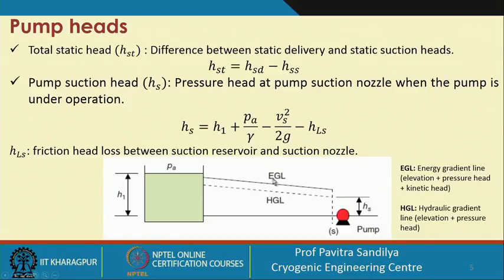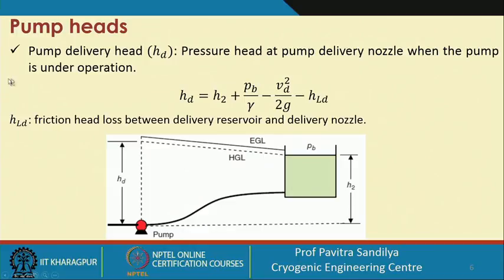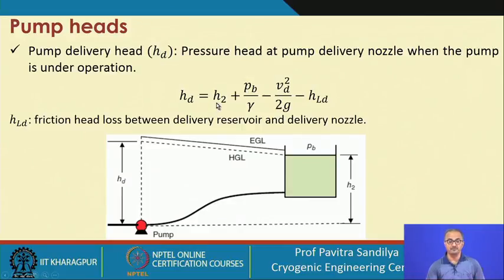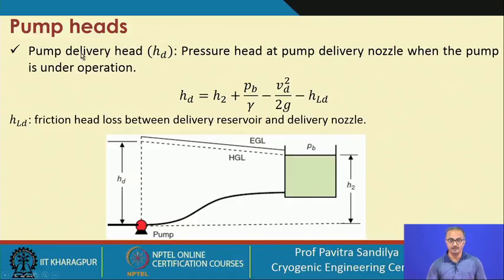In this figure we also have the Energy Grade Line (EGL) and the Hydraulic Grade Line (HGL). The EGL is the summation of the elevation head, pressure head, and kinetic head, while the HGL is elevation plus pressure head. On the delivery side, the pump delivery head is the pressure head generated at the delivery side when the pump is under operation — comprising the potential energy H2, the pressure head, the kinetic head, and the frictional loss in the delivery pipeline.